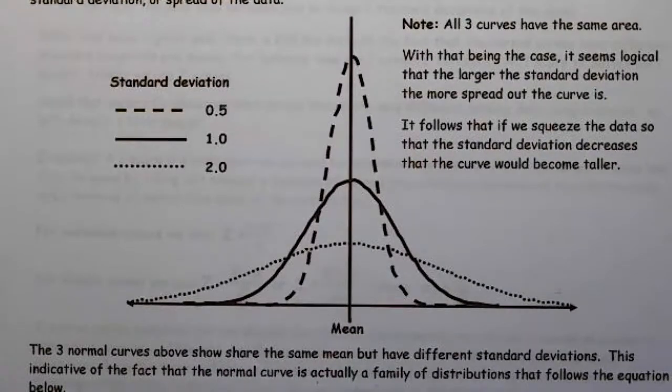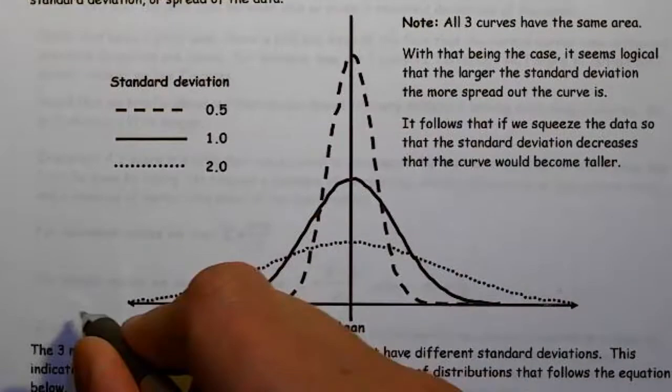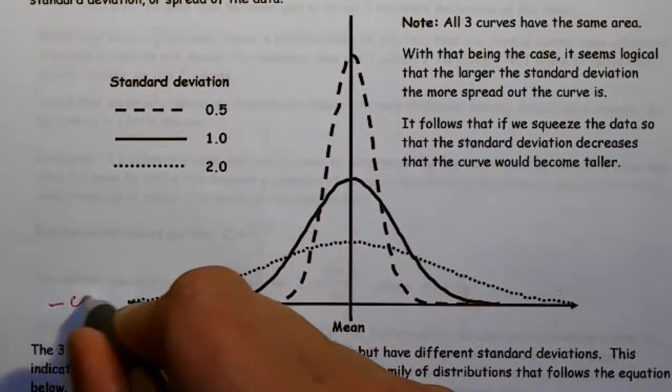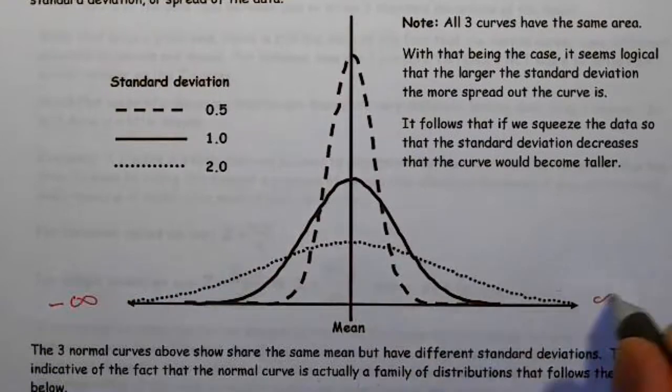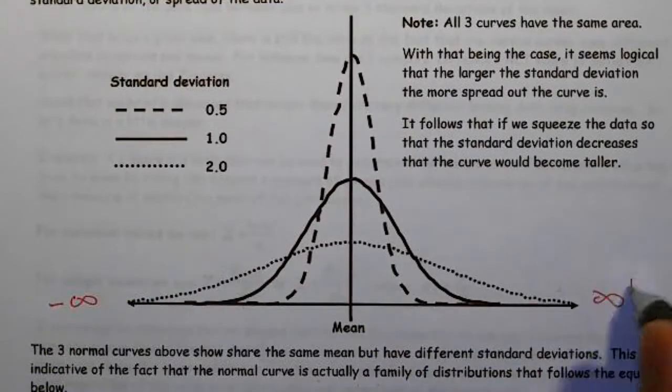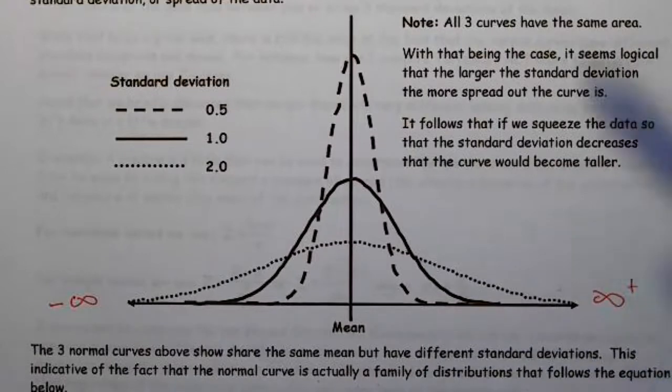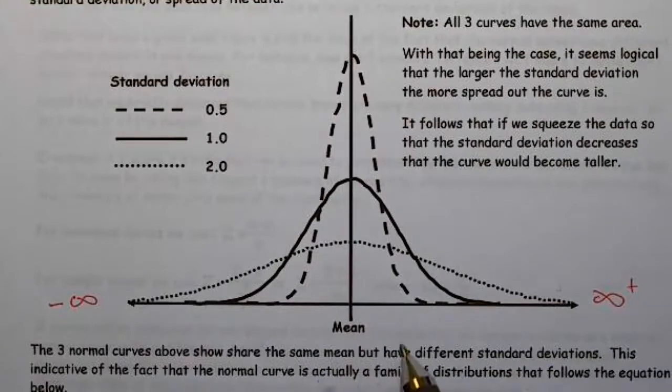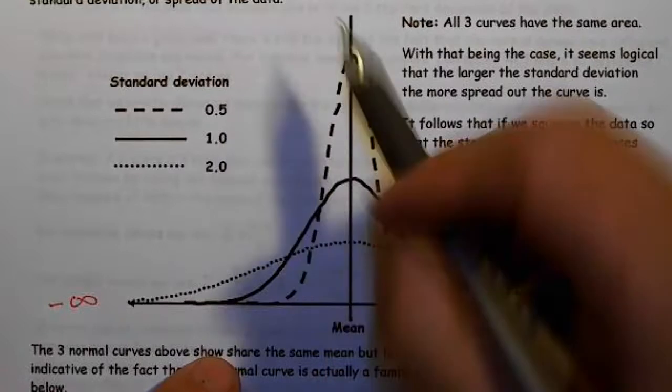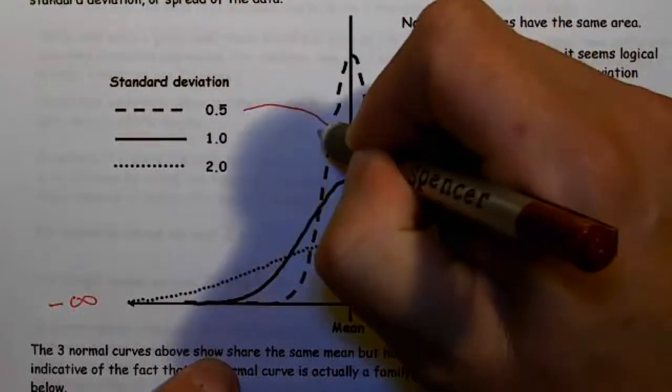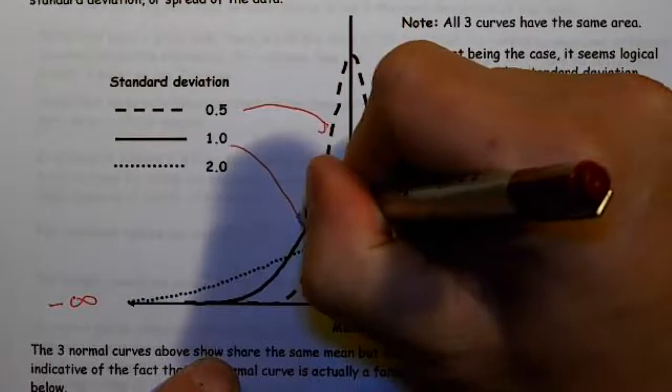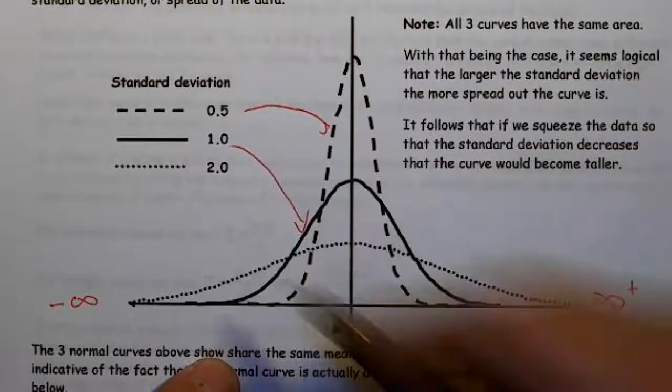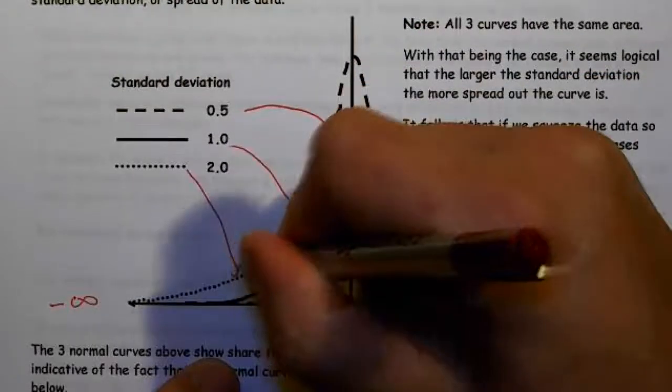So here we have three approximately normal distributions, and please know that they run from negative infinity to positive infinity. Okay, so from negative infinity to positive infinity. Now these three are all centered at the same mean. However, they have different standard deviations. The one with a dashed line has a standard deviation of 0.5, the solid line has a standard deviation of one, and the dotted line has a standard deviation of two.